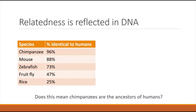Does this mean chimpanzees are the ancestors of humans? Absolutely not — that would be like saying you are descended from your cousin. Chimpanzees and humans are very distant cousins. There is a common misconception that evolution says humans are descended from monkeys — that's not what evolution says at all. It actually says that humans and chimpanzees are very distant cousins who descended from the same common ancestor millions of years ago, which then gave rise to multiple lineages — one leading to chimpanzees and one leading to humans.